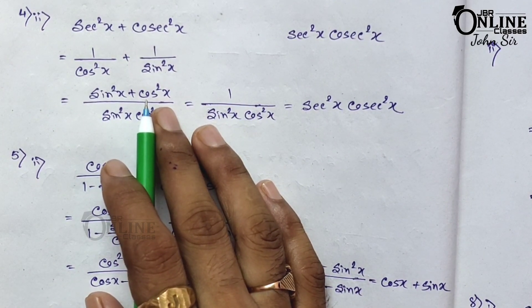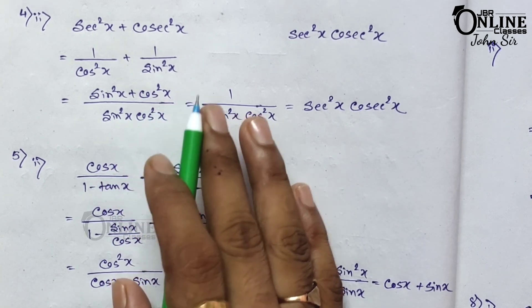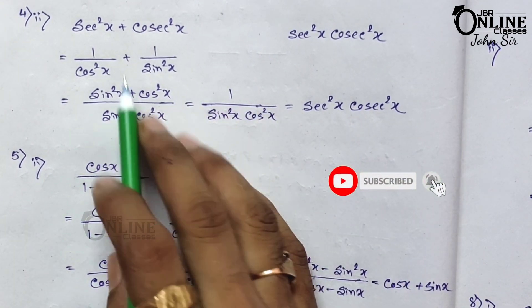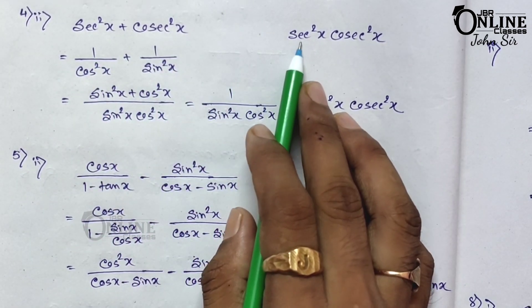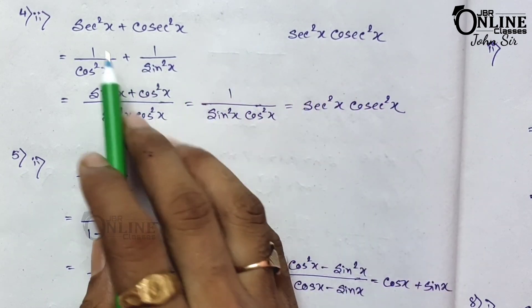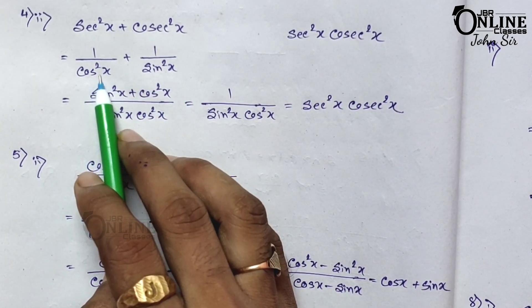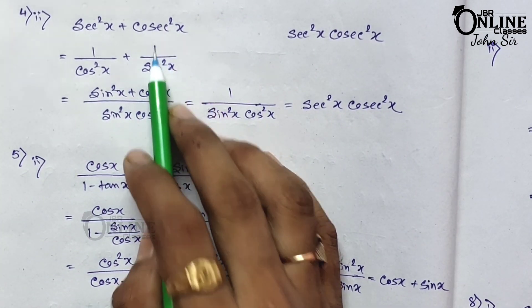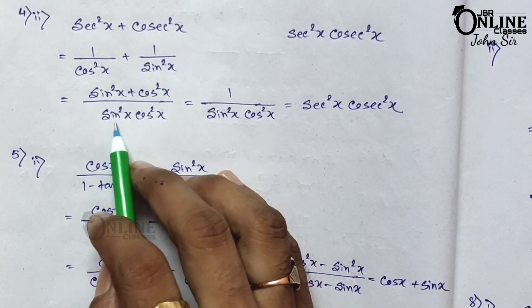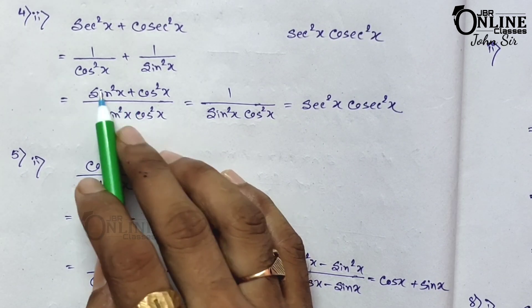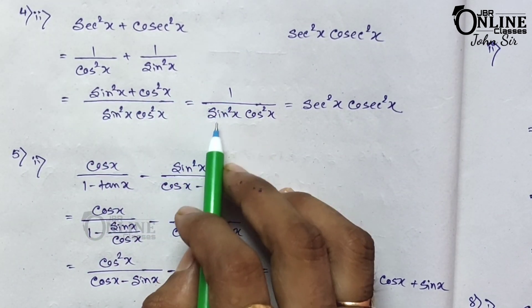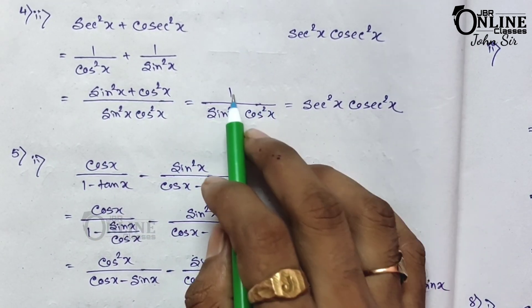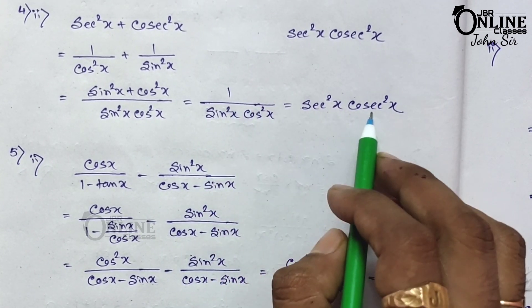Sum number 4: 2/sec²x + 2/cosec²x — show it equals sec²x·cosec²x. Change sec²x to 1/cos²x and cosec²x to 1/sin²x. The LCM is sin²x·cos²x, so the numerator becomes sin²x + cos²x = 1. Therefore the result is 1/(sin²x·cos²x), which equals sec²x·cosec²x, proved.